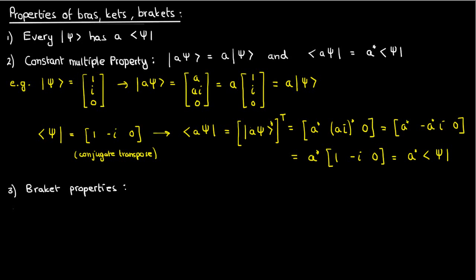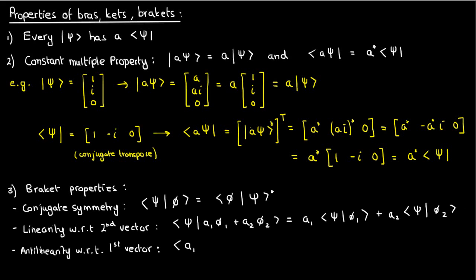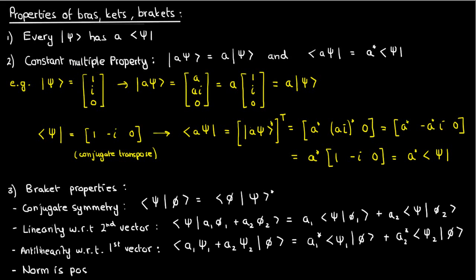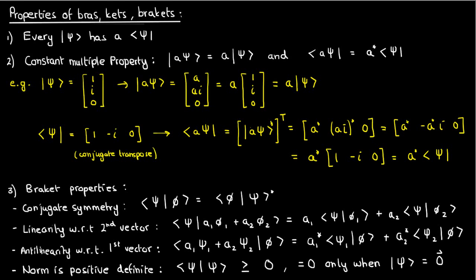So the properties of conjugate symmetry, of linearity in the second vector, antilinearity in the first vector, and the positive definiteness of the norm, which is just the scalar product of a vector with itself, all apply to brackets as well.